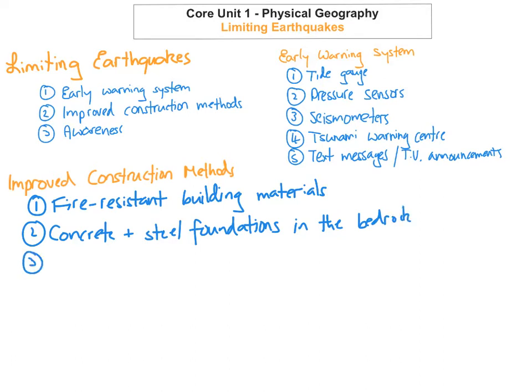The third way to limit the impact of earthquakes through construction is by having rubber shock absorbers within the foundations to absorb the earth tremors. These rubber shock absorbers help to reduce the impact of the tremors and seismic waves that are sent out.